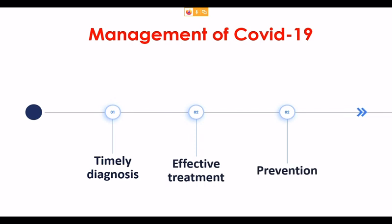For the effective management of COVID-19, there are three key elements. Number one, timely diagnosis. Number two, effective treatment. And number three, prevention.